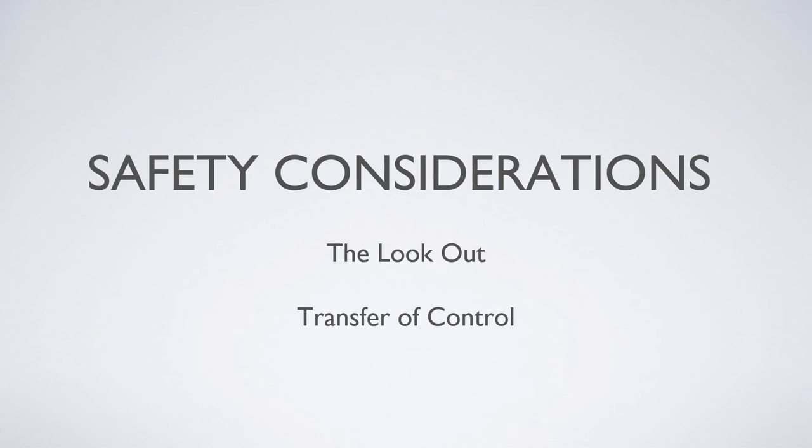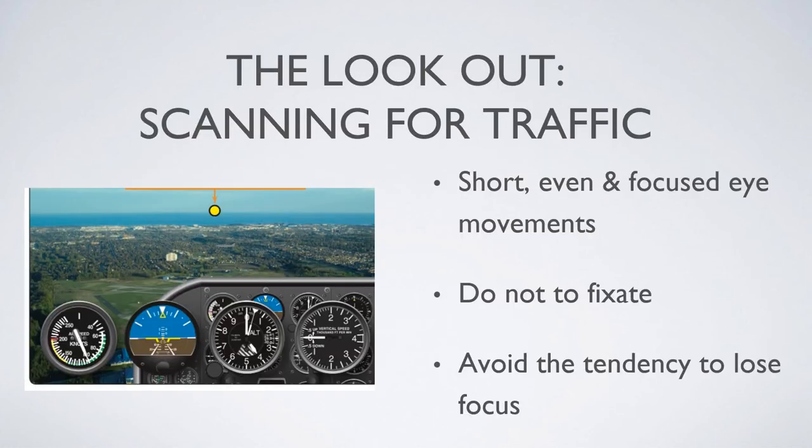Let's wrap this up by talking about some safety considerations for your first flight. When you get your private pilot license, you're getting a VFR license, which basically means — among other things — see and avoid. There are other aircraft out there and it's our job to see them and avoid them. You'll hear other aircraft referred to as traffic. Aircraft can be small and fast, so short, even, and focused eye movements — scanning — can help you spot them early and keep everyone safe.